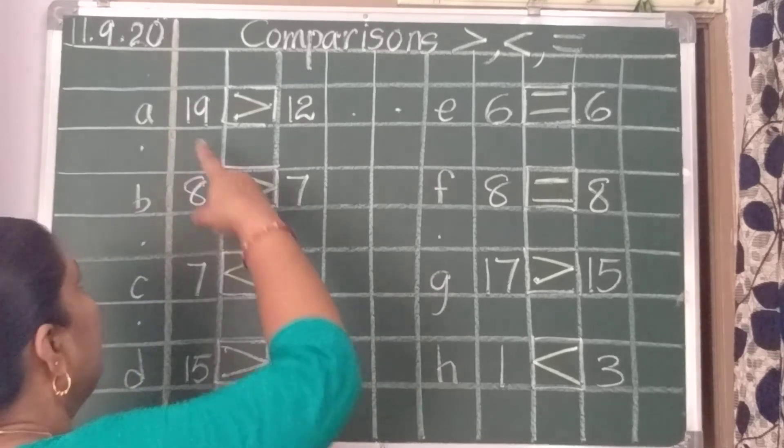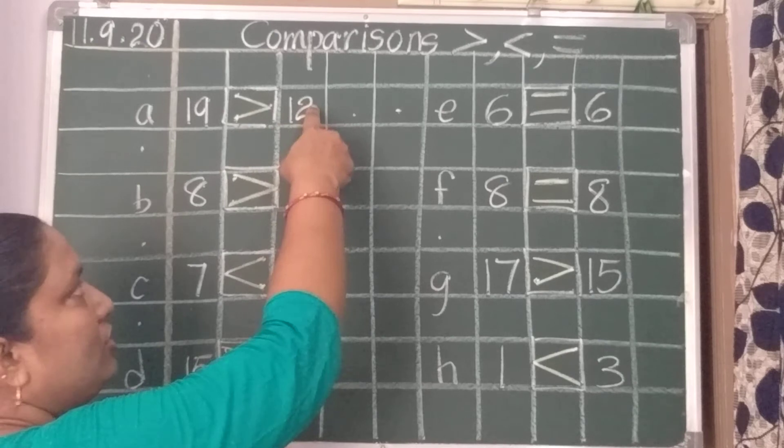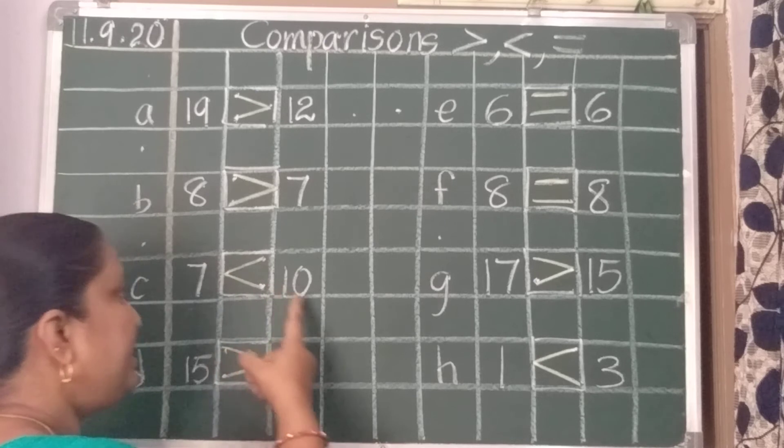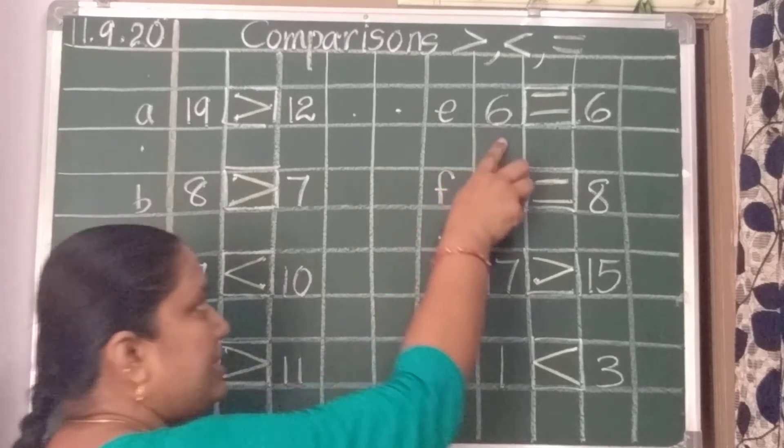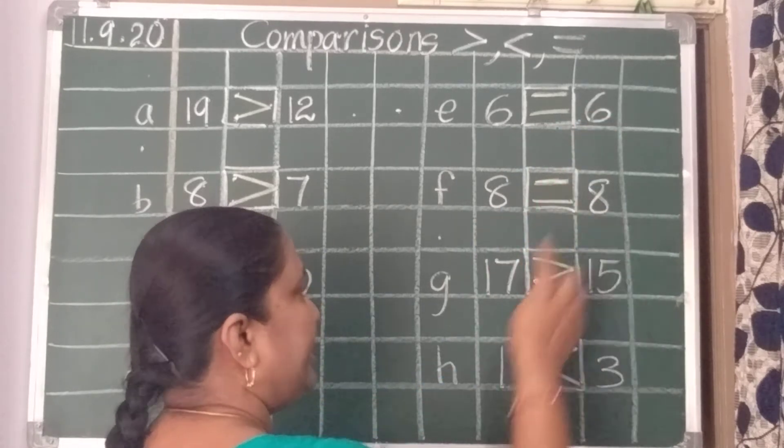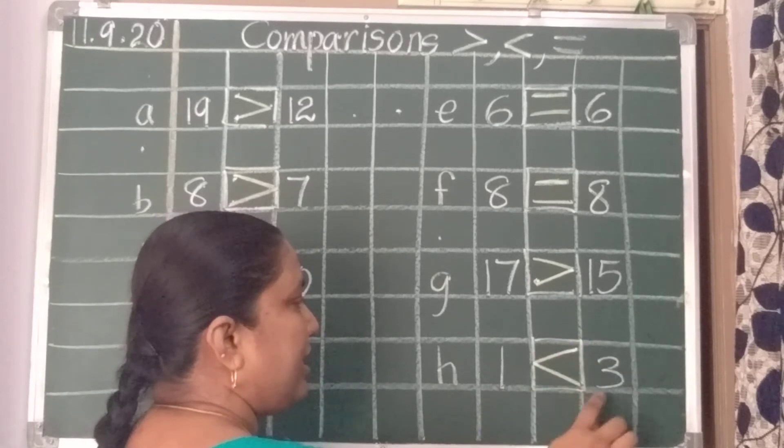Now, see children. Read it now. 19 is greater than 12. 8 is greater than 7. 7 is less than 10. 15 is greater than 11. 6 is equals to 6. 8 is equals to 8. 17 is greater than 15. 1 is less than 3.